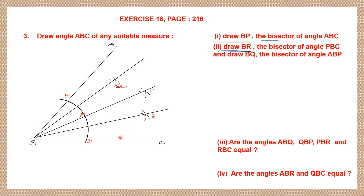Now the third question: are the angles ABQ, QBP, PBR, and RBC all equal? ABQ is this angle, QBP is the angle in green, PBR is the angle in yellow, and RBC is the angle in blue. The answer is yes — they are all equal.